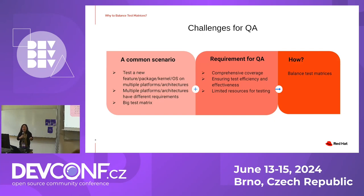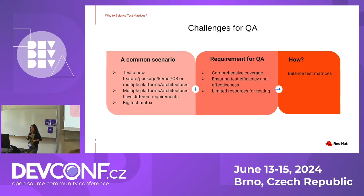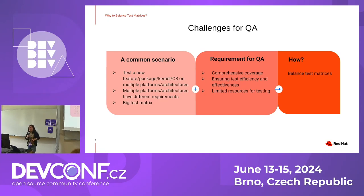I think most QA engineers may have met such a challenge. We need to test a new feature, package, kernel, or OS on multiple platforms or architectures. These platforms always have different requirements, meaning there is a big test matrix. There are always requirements for QA to ensure comprehensive coverage, test efficiency and effectiveness, but we always have limited resources for testing.